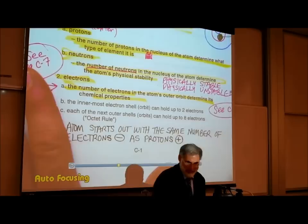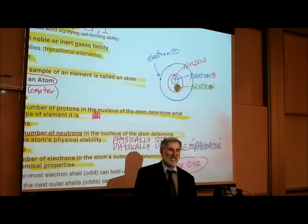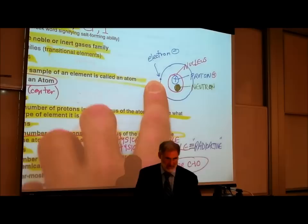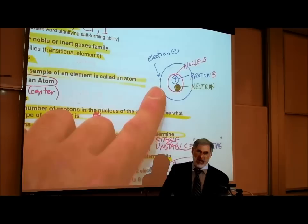We've talked about what's in the nucleus, and we've said what protons determine and what neutrons determine. Circling, orbiting around the nucleus, are extremely small particles called electrons.